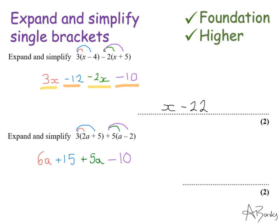Again that's my first mark for expanding so I've now got to simplify this because my 6a and 5a will simplify to 11a and then I have 15 and minus 10 that will simplify to 5.